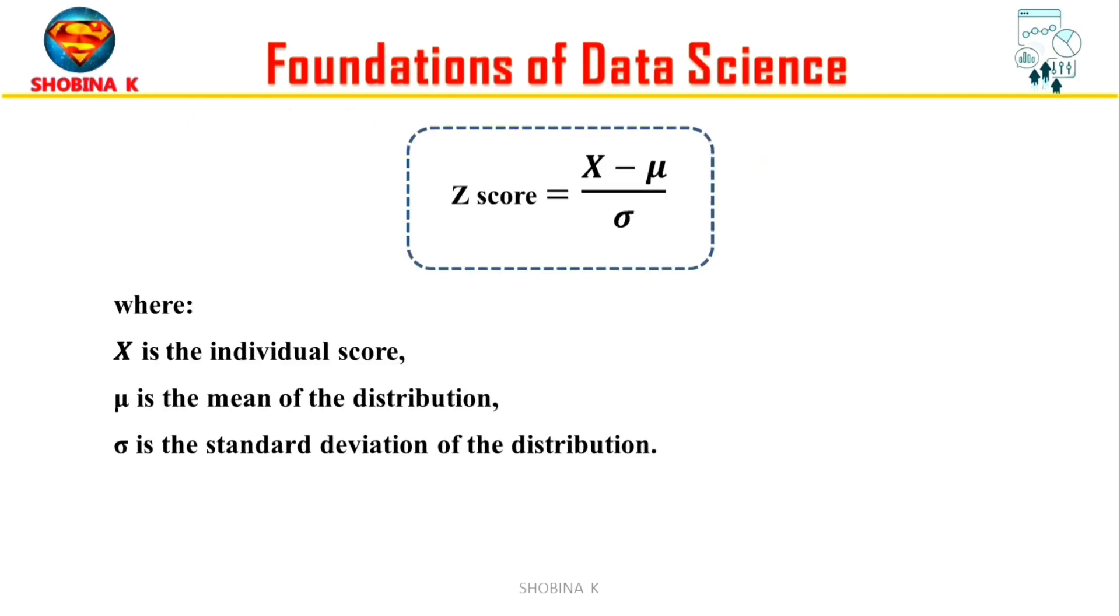And this is the formula to calculate the z-score: that is X minus μ divided by σ, where X is the individual score, μ is the mean of the distribution, and σ is the standard deviation of the distribution.